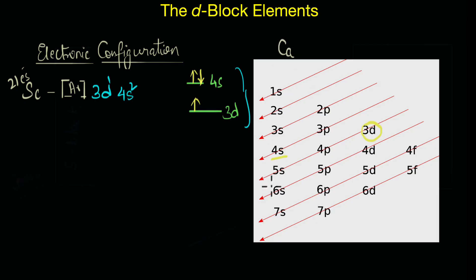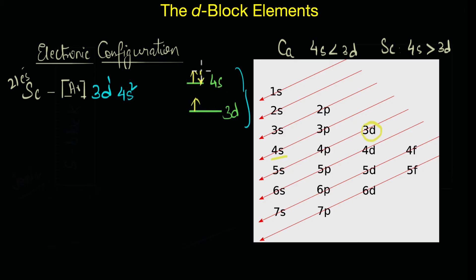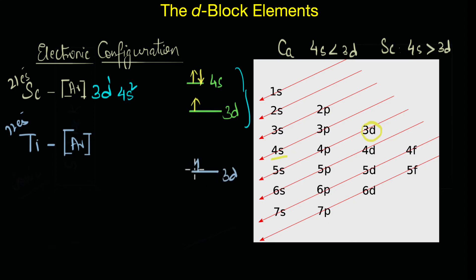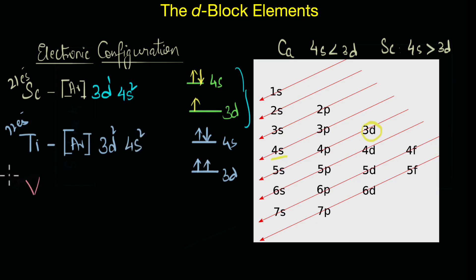All you need to remember is that until calcium, the 4s subshell is lower in energy than 3d, as per the Aufbau principle. But from scandium onward, this order reverses and 4s becomes slightly higher in energy than 3d. For titanium, which has 22 electrons, the first electron goes into 3d, the second and third go into 4s, and the fourth goes back to 3d, giving the configuration [Ar]3d²4s².